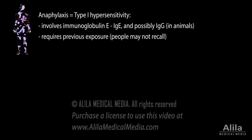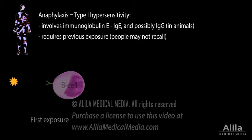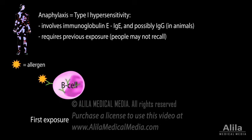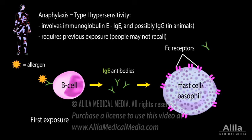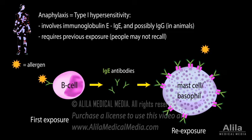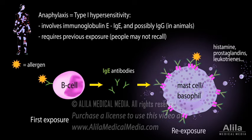Classically, anaphylaxis is defined as a type 1 hypersensitivity, which involves immunoglobulin E, IgE, and only occurs in pre-sensitized individuals. Patients must have had a previous contact with the allergen, which produced no symptoms, but during which the body had produced IgE antibodies against the allergen. IgE molecules bind to their receptors on the surface of mast cells and basophils. Upon re-exposure to the same allergen, or sometimes a similar allergen, the allergen binds to adjacent IgE molecules, bringing their receptors together, triggering a signaling cascade that induces the release of inflammatory chemicals.